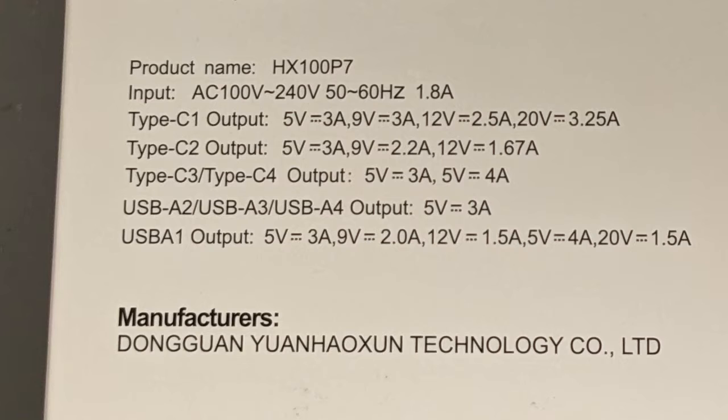The first USB-C output can go all the way up to 20 volts at 3.25 amps, like 65 watts. The second USB-C output does 5, 9, and 12 volts, so it can't get quite as high watt-wise. The third and fourth USB-C outputs are limited to 5 volts,